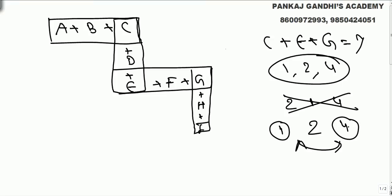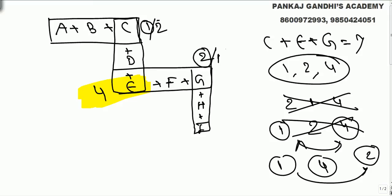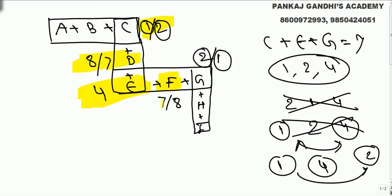So compulsorily, E has to be 4, and the remaining values 1 and 2 are interchangeable between C and G. If E is 4, then C plus D plus E sums correctly — D becomes either 7 or 8 depending on whether C is 1 or 2. What we are sure of is E has to be 4.